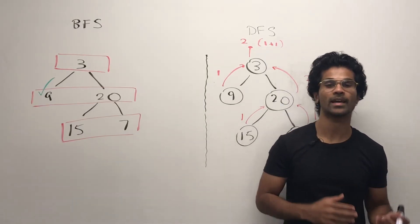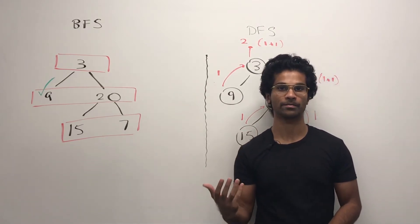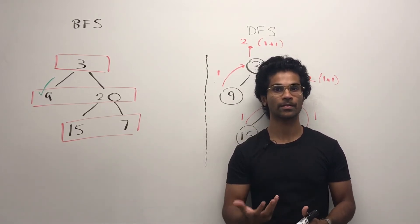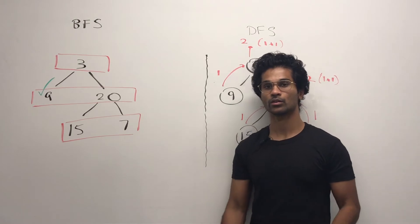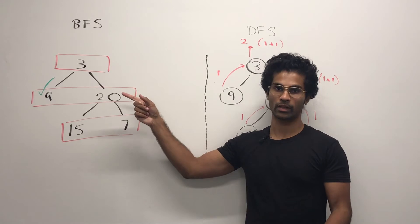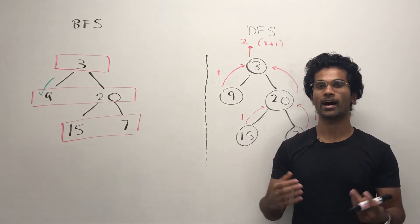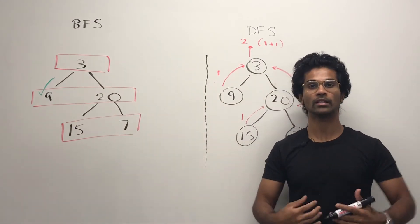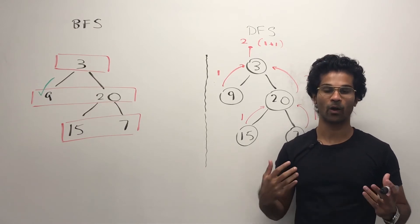We can approach the problem using BFS and DFS. With BFS, we can look at the tree layer by layer, and since we want the minimum depth, the minute we hit a layer which has a leaf node, we can return the number of layers we've counted. So in this example, starting from 3, we go through the first level and get to the second level. Once we hit 9, we know we hit a leaf node, and all we had to do was keep track — 1, 2 — of how many layers we've traversed. Once we've done that, we simply return, and that's going to be our answer.